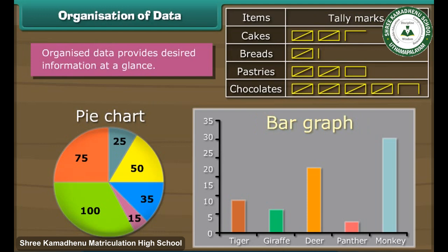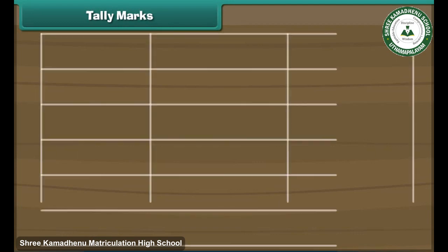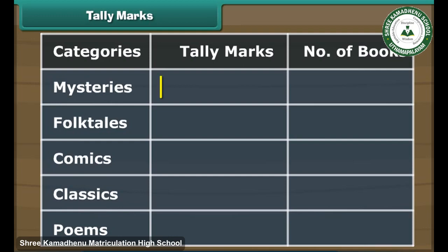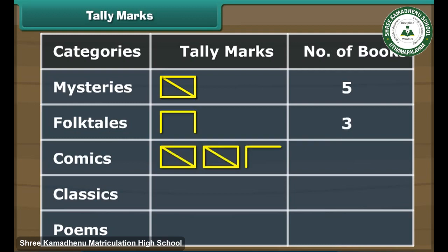Now let us organise Ravi's data with the help of tally marks. Make three columns: Categories, Tally Marks, and Number of Books. Write down the five different categories under the categories column. Draw a vertical line against the mysteries category for the first book. Draw a horizontal line for the next book in the same category, and a vertical line for the third. Draw a horizontal line for the fourth book to complete the rectangle. Represent the fifth mystery book with a line drawn between two opposite ends of the rectangle. We repeat the exercise for other categories. The end result is a tally marks table.